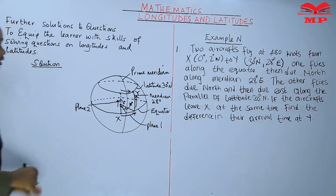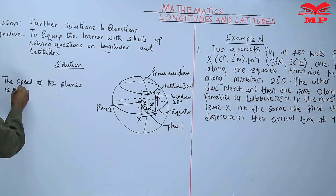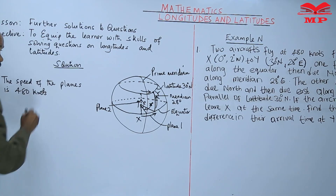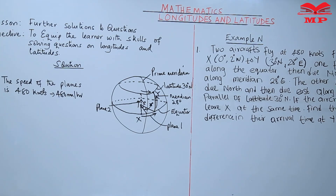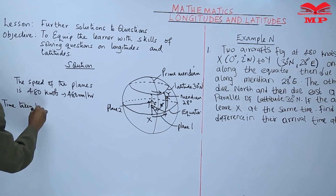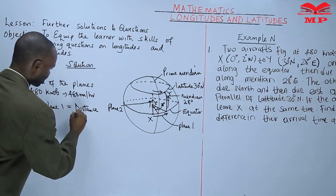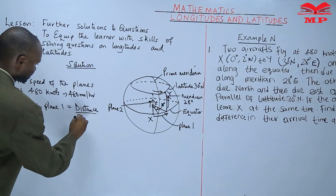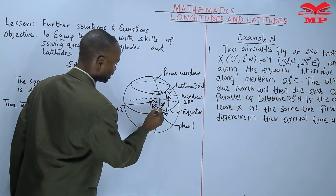There is something given — the speed of the planes is 480 knots. 480 knots is 480 nautical miles per hour. So you get the time taken by plane one: time equals distance over speed. You can see how plane one moves — this is 2 degrees and that is 28 degrees, so there is a change in longitude of 30 degrees.